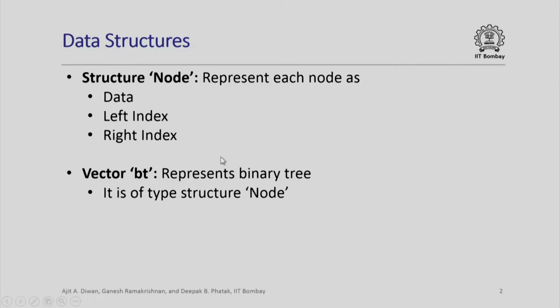The data structures that we would use would be a node first of all. Each node will have data, left index, and right index as we have already seen. For representing the binary tree, we are going to use an object of class vector. So bt, for example, we will use to represent binary tree. It is of type structure node.